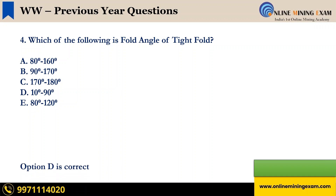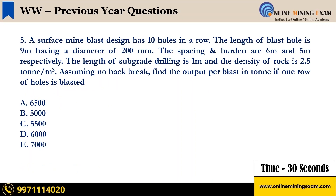Time up. The correct answer is D: 10 degree to 90 degree. Next question. A surface mine blast design has 10 holes in a row. The length of blast hole is 9 meter having a diameter of 200 millimeter. The spacing and burden are 6 meter and 5 meter respectively. The length of subgrade drilling is 1 meter and the density of rock is 2.5 ton per cubic meter. Assuming no back break, find the output per blast in tons if one row of holes is blasted. A: 6500, B: 5000, C: 5500, D: 6000, E: 7000. Your time starts now.